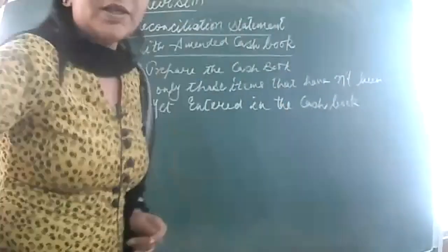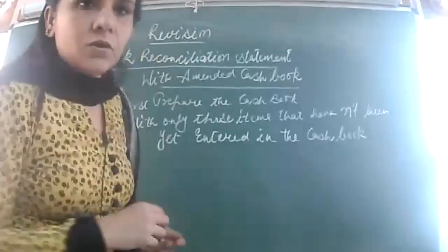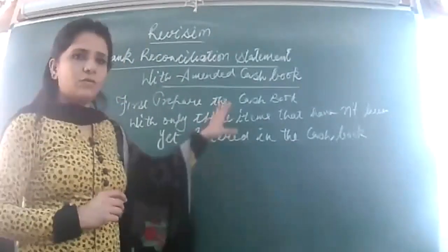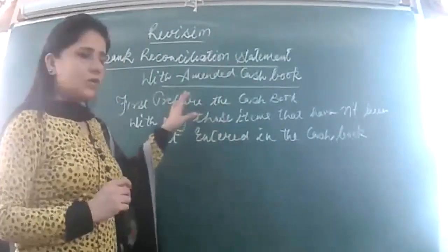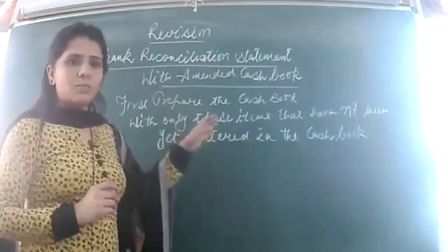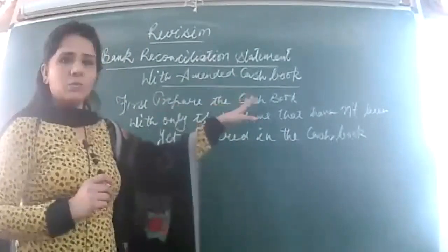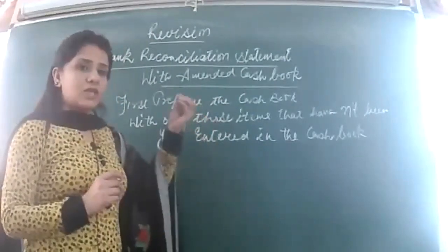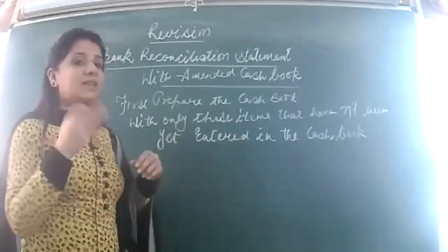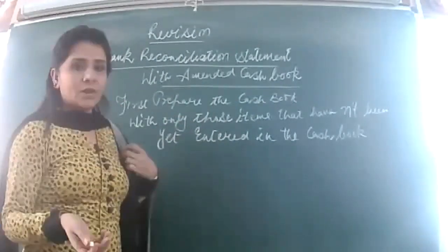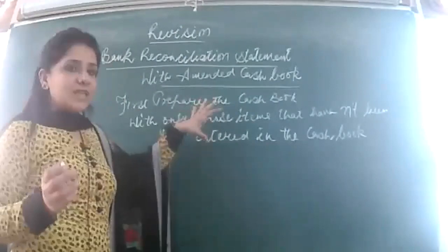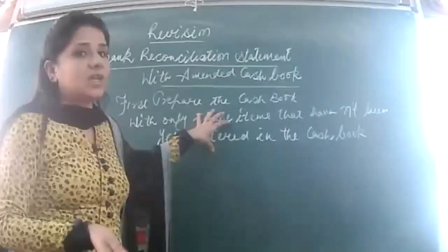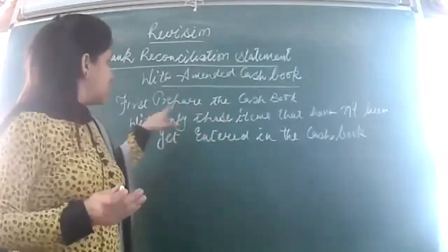Students, let's begin. Yesterday we discussed the simple questions from this chapter on Bank Reconciliation Statement. Today we are going to take the last topic of the chapter — BRS with amended cash book. This question becomes very easy because a few items you will put in the amended cash book, and only the leftover items you will put in the BRS. Firstly, after reading your question, you have to identify those items which have not yet been entered in the cash book.